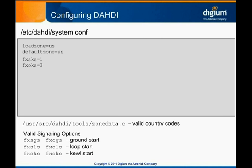It doesn't matter where in the file these lines are listed, and they don't have to be placed together, but we recommend putting all of your configuration at the bottom of the file so it's easy for an administrator to see at a glance all of the options that have been set. Ports do not need to be configured individually. If we had a TDM2400P with FXO ports for the first 12 channels and FXS ports for the remaining channels, we could list them as a range: FXSKS equals 1-12, and FXOKS equals 13-24.